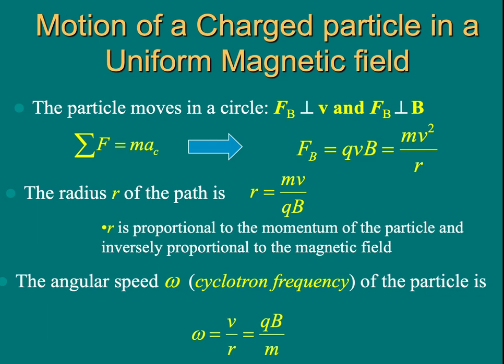We have magnetic force is given by QvB sine theta. In the case where the velocity is perpendicular to the magnetic field, theta is 90 degrees, and sine 90 degrees equals 1. So the magnetic force is simply given by QvB.